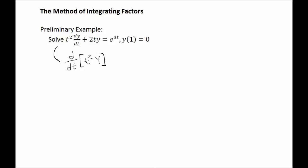This step is what we're referring to as reversing the product rule. So that's the left side of the differential equation; the right side is still e to the 3t. Now notice that we could try to isolate t squared y by anti-differentiating both sides of this equation. Anti-differentiating the derivative of t squared y should give us back t squared y, as differentiation and anti-differentiating undo each other.